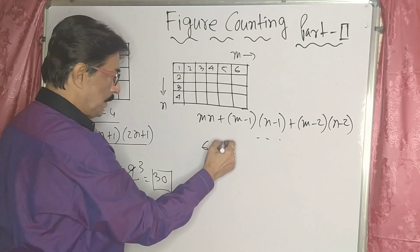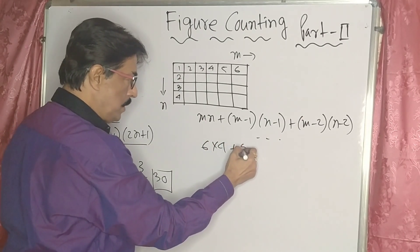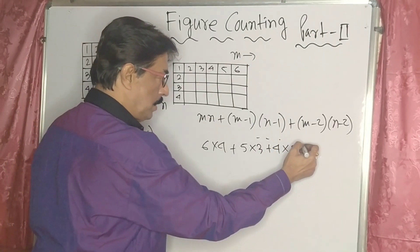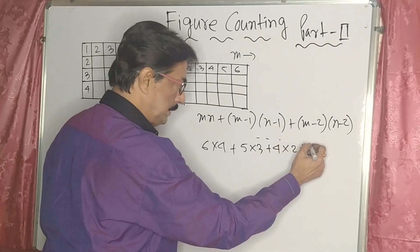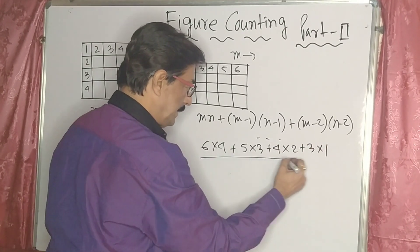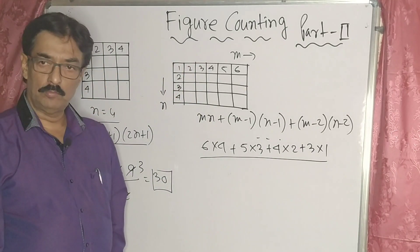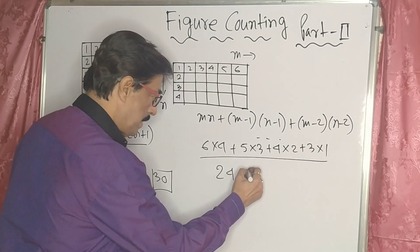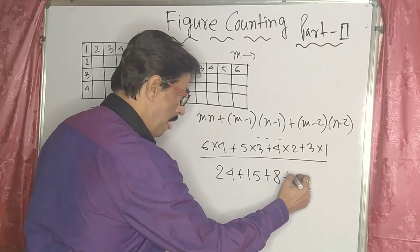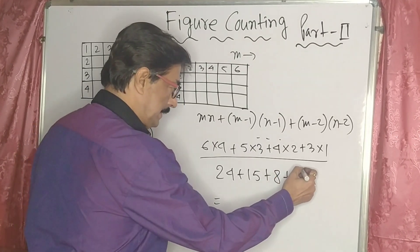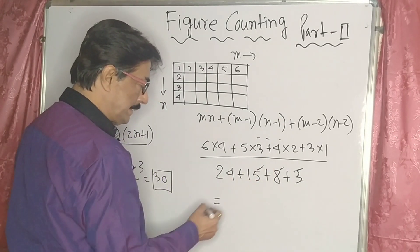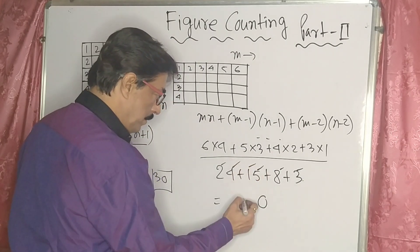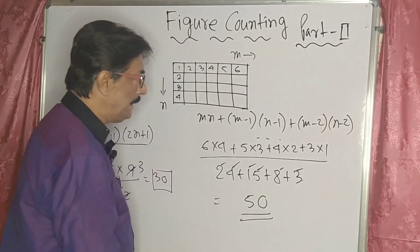So: 6×4 = 24, then 5×3 = 15, then 4×2 = 8, then 3×1 = 3. Adding the results: 24 + 15 + 8 + 3. That gives 3 + 8 = 11, plus 15 = 26, plus 24 = 50. So there are 50 squares inside the figure.